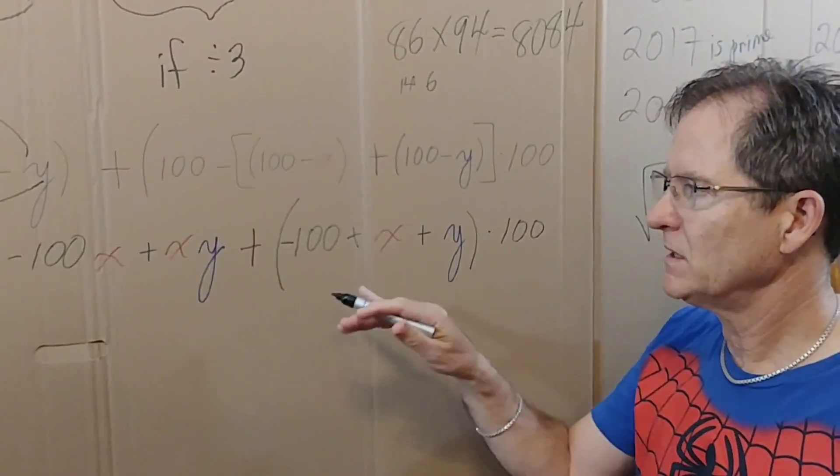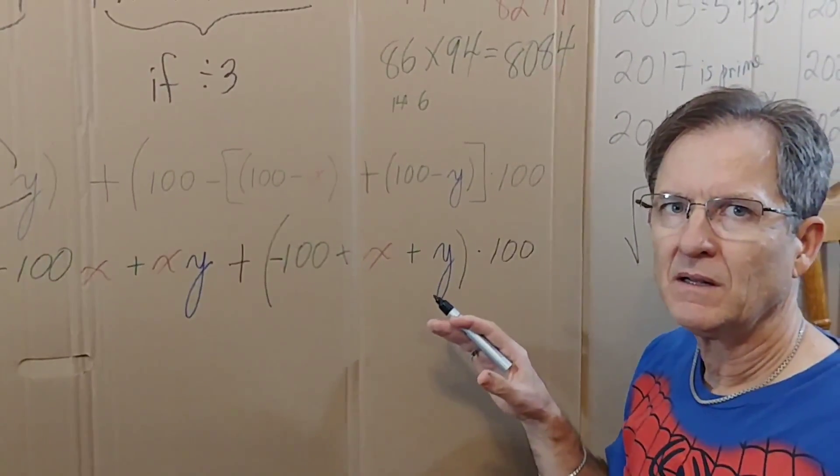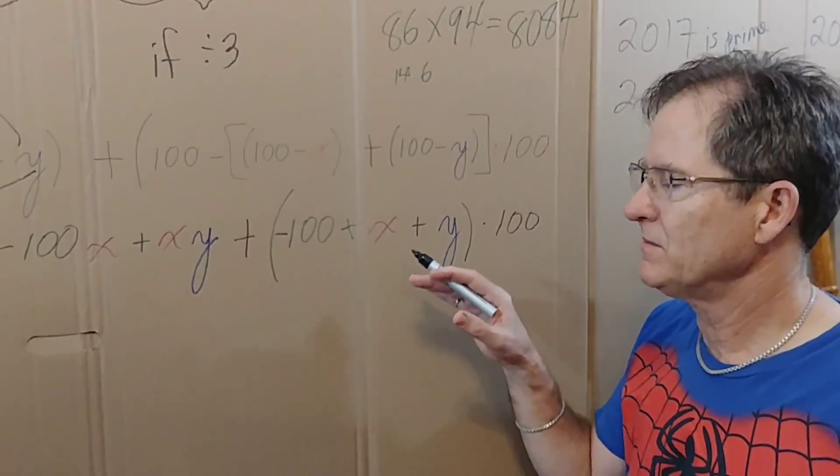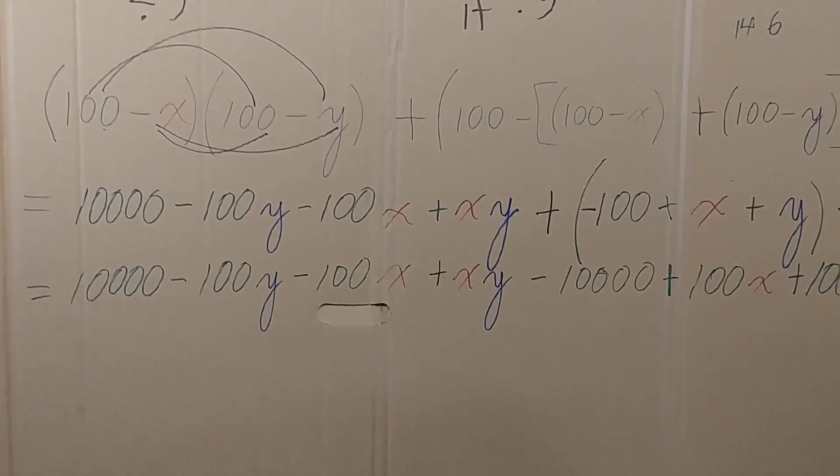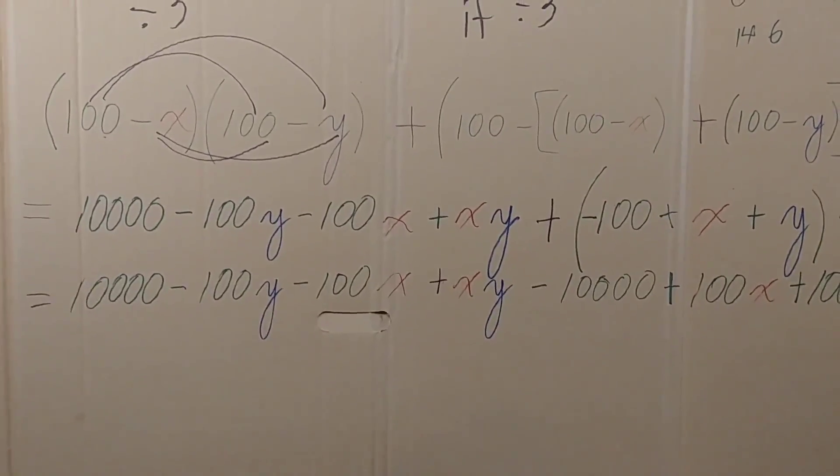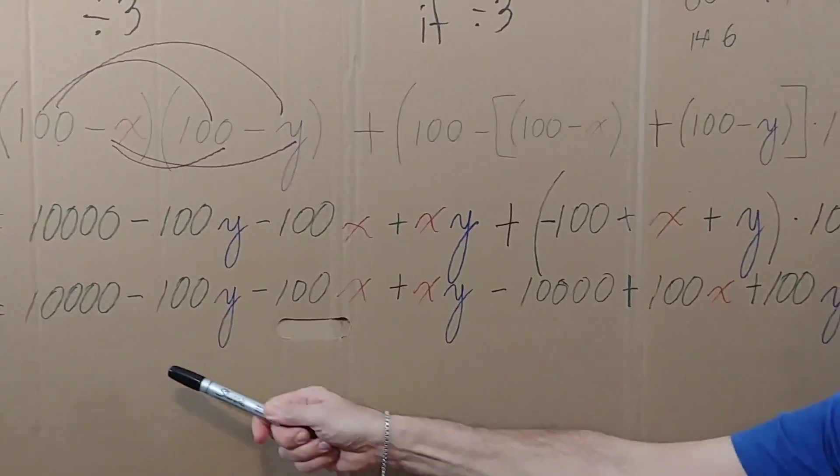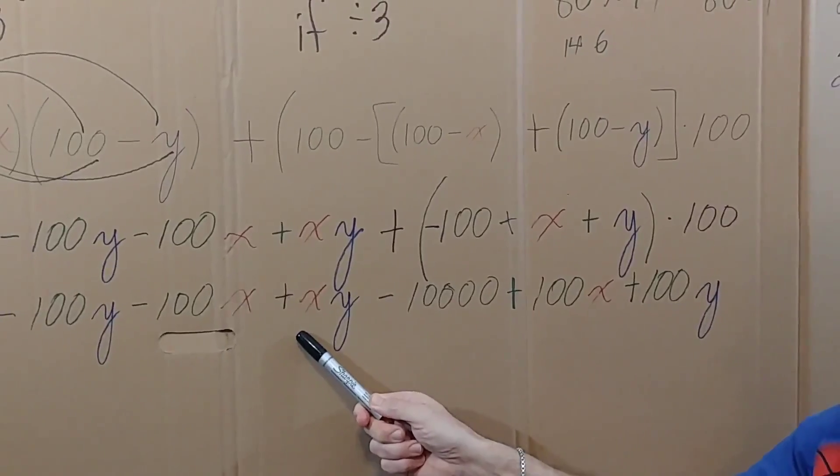So now you can see it's starting to take shape. If you want, you can pause and simplify the next step. Okay, so here's the next line. The first few terms are the same, and then over here I multiplied by 100.